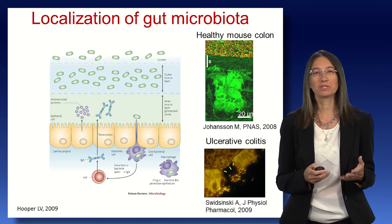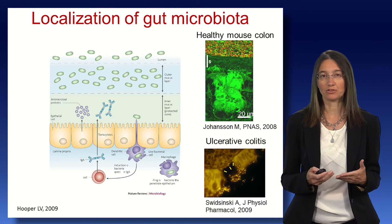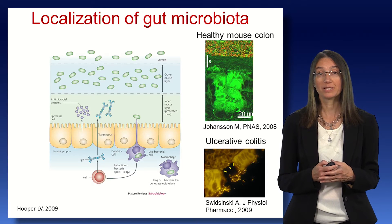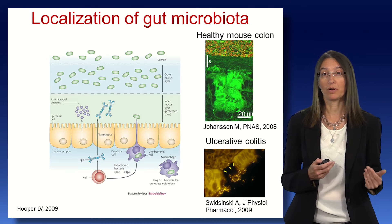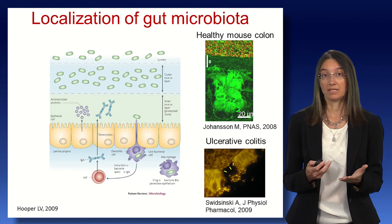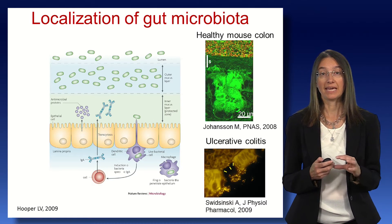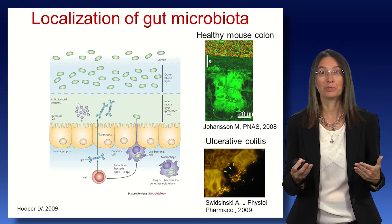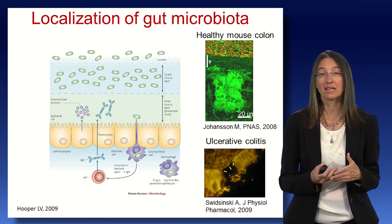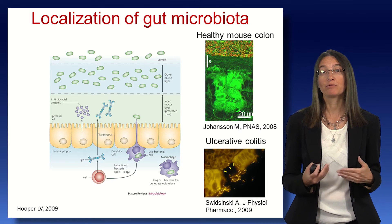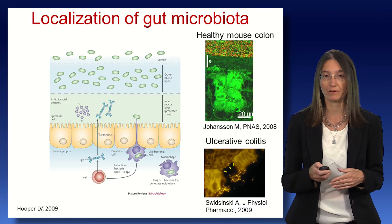This microbiome is localized within the intestinal lumen or in association with the mucosa, but never in direct contact with the intestinal epithelium. There will always be a mucous layer that physically separates these bacteria or other microorganisms from the epithelium. This is typical of a healthy situation, represented by the top picture, where you can see a mucous layer that physically separates the bacteria in the lumen from the underlying epithelium. In disease situations such as ulcerative colitis, this mucous layer may be interrupted, allowing for direct contact between the microorganisms and the intestinal cells, which may result in an inflammation response.